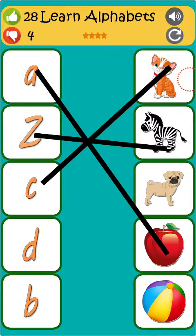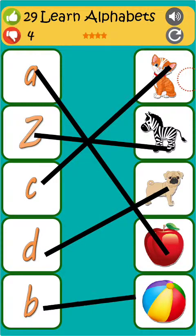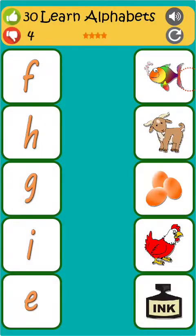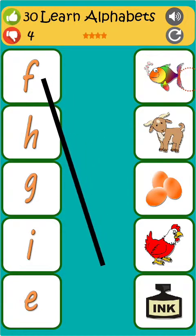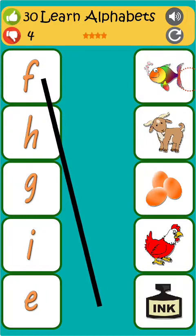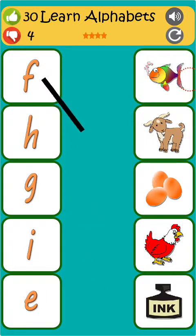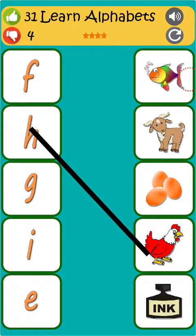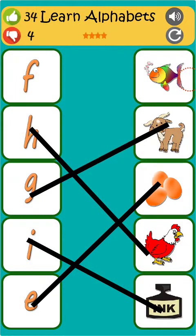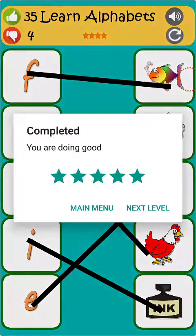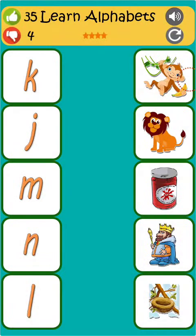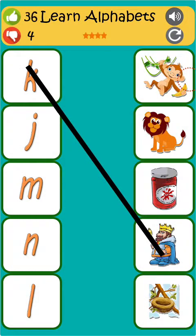C is for cat. D is for dog. B is for ball. H is for hen. F is for fish. I is for ink. E is for egg. G is for goat. F is for fish. K is for king.